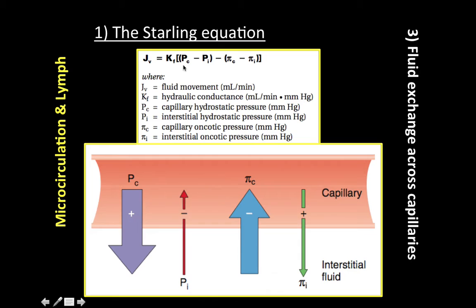We have PC and PI, which are hydrostatic pressures, and pi, which is oncotic pressure. PC is the capillary hydrostatic pressure. An increase in PC favors filtration out of the capillary. PC is determined by arterial and venous pressure and resistances, so an increase in either produces an increased PC. An increase in venous pressure has a greater effect on PC. Additionally, PC is higher at the arterial end of the capillary than the venous end.